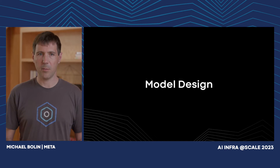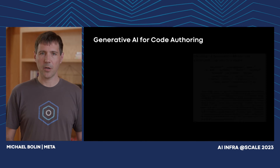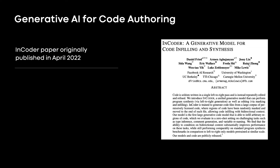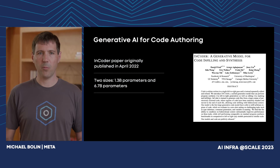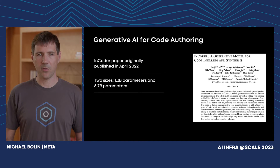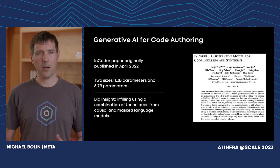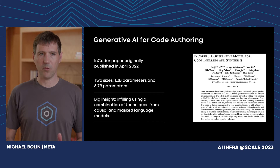Let's start by digging into the model. About a year ago, FAIR released Encoder, a generative AI model trained on code. This model comes in two variants: a smaller model with 1.3 billion parameters and a larger model with 6.7 billion parameters. For the Code Compose service, we use both variants of Encoder, which, based on context, lets us optimize the tradeoff between quality and latency. A key difference between Encoder and other large language models currently used for code generation is its ability to perform infilling.